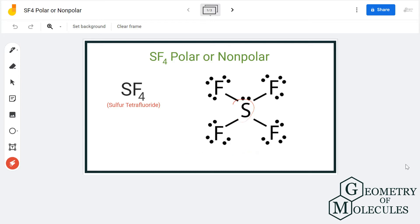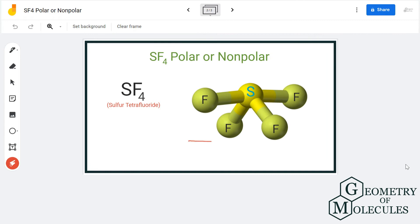All the fluorine atoms are arranged around sulfur like this, so they are forming a seesaw shape if you see it in 3D. Here you can see that it is forming a seesaw shape.